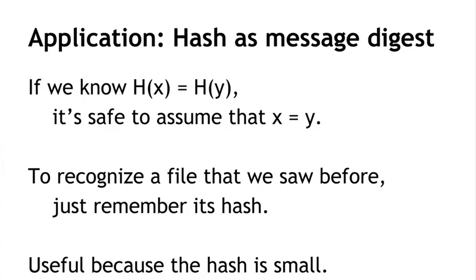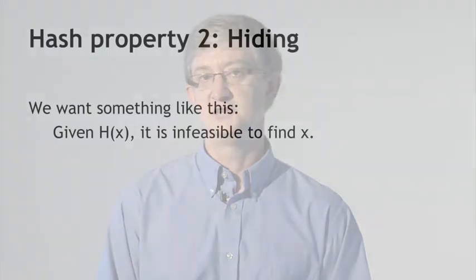One way to do that would be to save the whole big file and compare them later. But because we have hashes that we believe are collision-free, it's more efficient to just remember the hash of the original file. Then if someone shows us a new file and claims it's the same, we can compute the hash of that new file and compare the hashes. If the hashes are the same, then we conclude that the files must have been the same. And that gives us a very efficient way to remember things we've seen before and recognize them again. The hash is only 256 bits, while the original file might be really big. So hash is useful as a message digest.